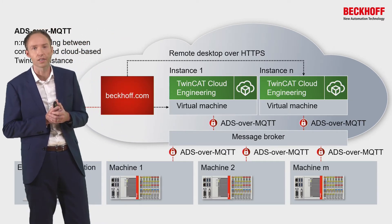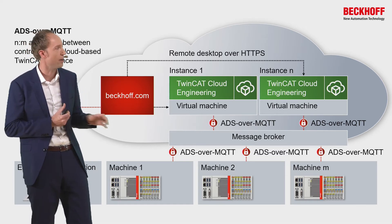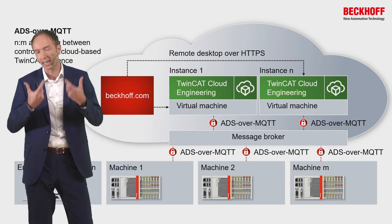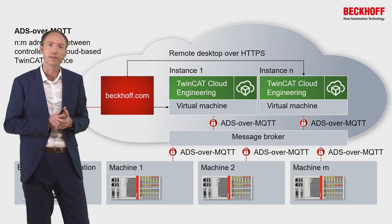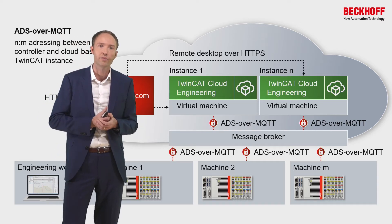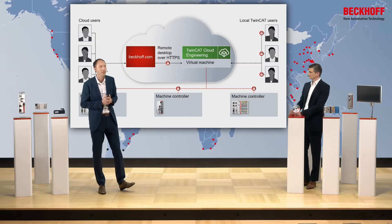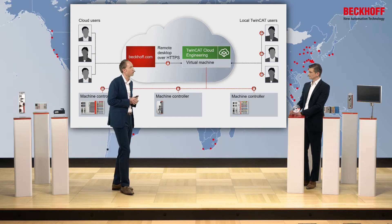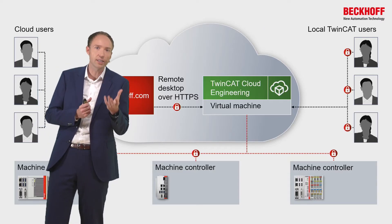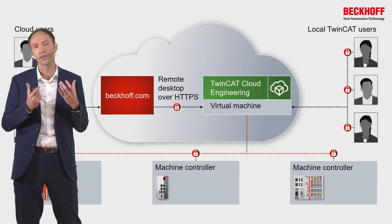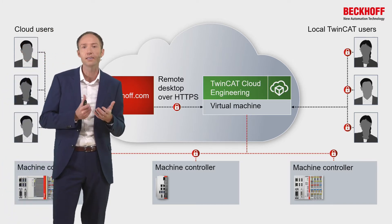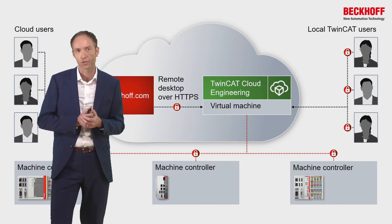ADS over MQTT makes sense for end-to-end connectivity scenarios where you have multiple underlying devices and multiple TwinCAT Cloud Engineering instances that you want to connect together. In that scenario, a message broker decouples the applications and also uses TLS for transport layer security. There are also source control capabilities based on Git, which allow you to share projects between cloud users and on-premise users.